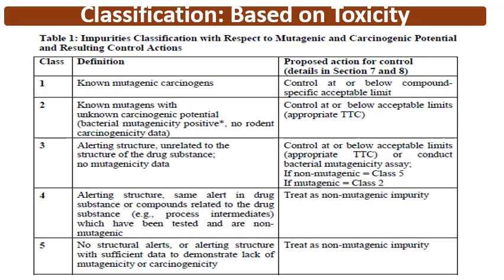Reviewing the classes again with their definitions and proposed actions: Class 1 are known mutagenic carcinogens — known Nitrosamines — controlled at or below compound-specific acceptable intake (AI) limits. Class 2 are known mutagens with unknown carcinogenic potential; bacterial mutagenicity is positive but no rodent carcinogenicity data is available. These are controlled at or below the TTC limit as given in the ICH M7 guidelines.